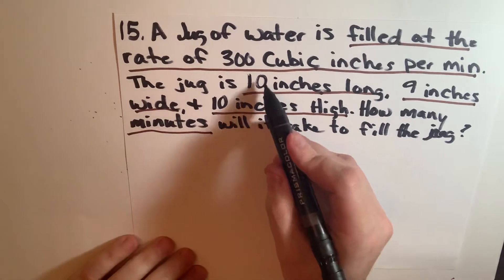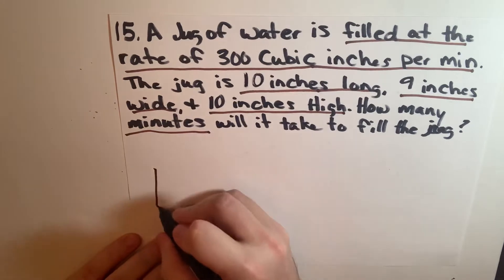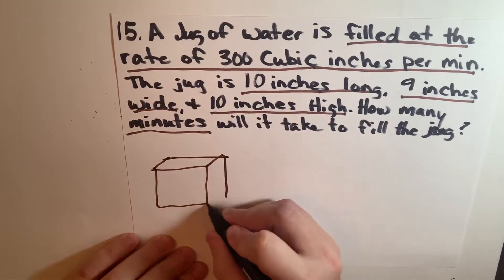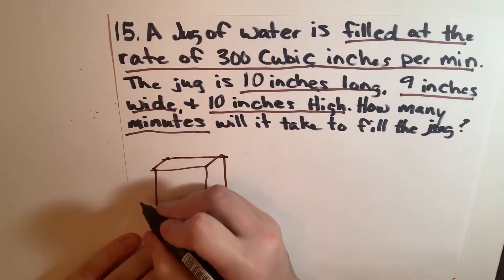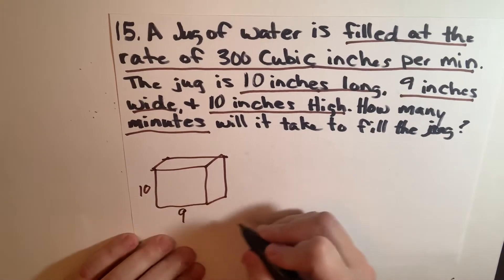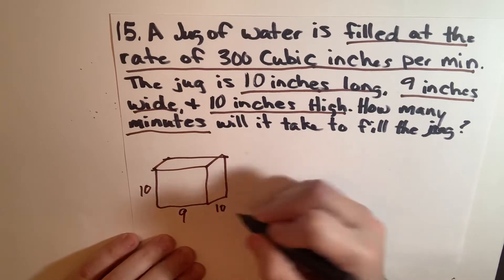So first we have the shape of our jug so we can draw it out. It is 10 inches long, 9 inches wide, and 10 inches high.